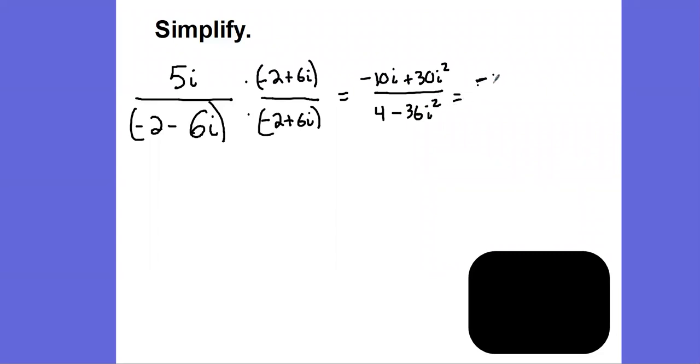Substitute in negative 1 everywhere you see i squared. So this will be negative 10i plus 30 times negative 1 all over 4 minus 36 times negative 1. Let's clean this up a little bit. So this will be negative 10i minus 30.